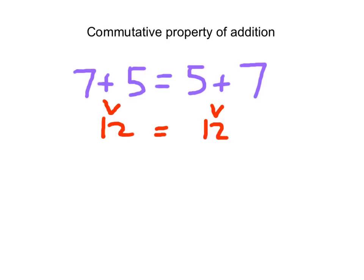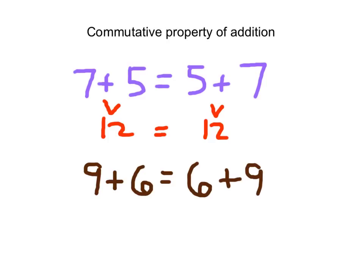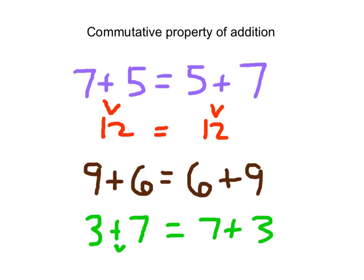Here's another example: if we had 9 plus 6, our order of the addends is 9 and then 6 on the left-hand side. On the other side, we write 6 plus 9 to demonstrate this commutative property of addition. One last example: 3 plus some number equaling 7 plus 3 — we have to add 7. So 3 plus 7 equaling 7 plus 3; that is the commutative property of addition. 3 plus 7 is 10, and 7 plus 3 is 10.